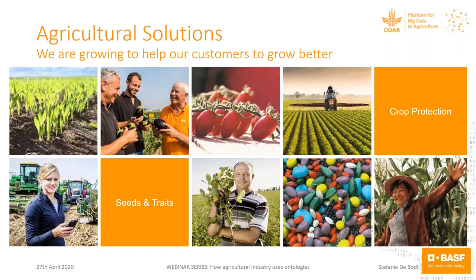There are two main parts: one being crop protection, which has been a long-standing activity within BASF. But since August 2018, BASF Agricultural Solutions also has substantial activities in Seeds and Traits, with the acquisition of a part of the Seeds and Traits businesses from Bayer. Within Seeds and Traits, there are vegetable activities — tomatoes and aubergines — and field crops such as soy, cotton, canola, and wheat. Today I will focus on the Seeds and Traits part.